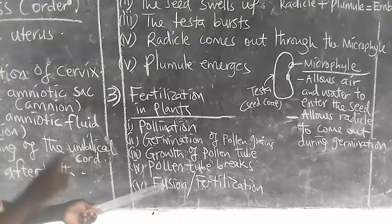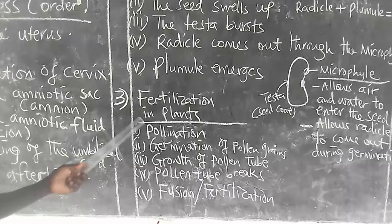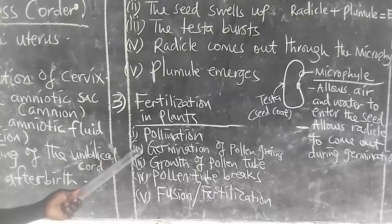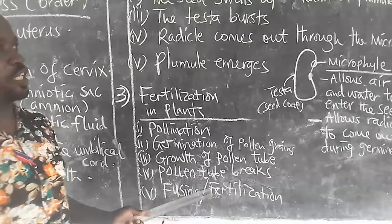I repeat, steps followed during fertilization in plants: number one, pollination; number two, germination of pollen grains, which occurs at the stigma; number three, growth of pollen tube; number four, pollen tube breaks; number five, fusion — that is fertilization.